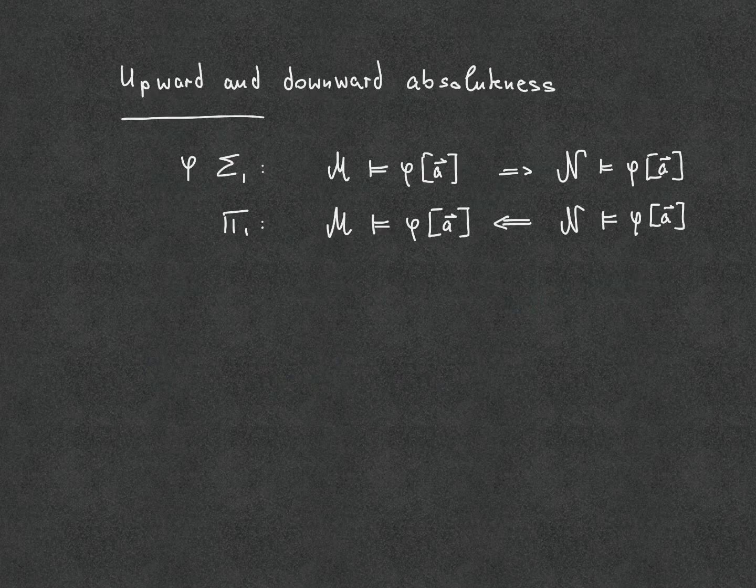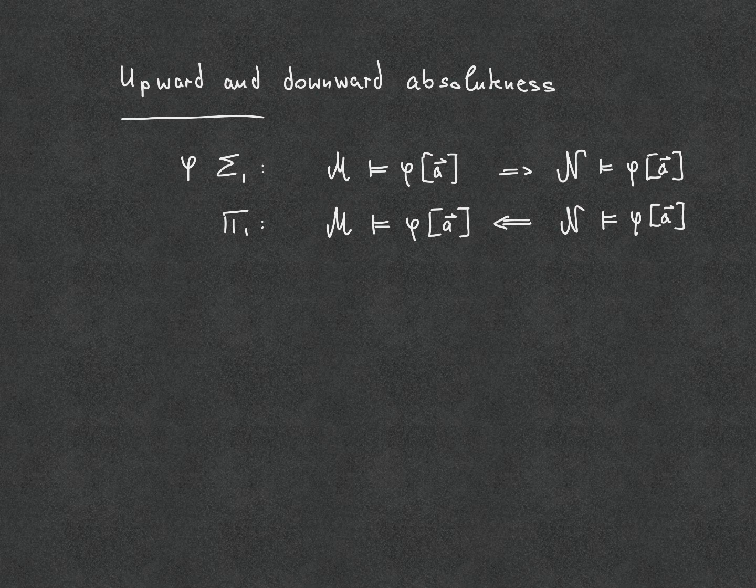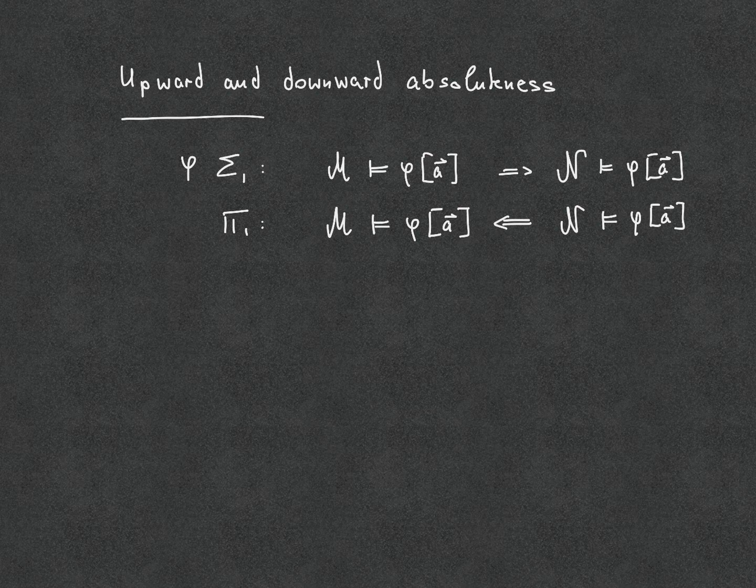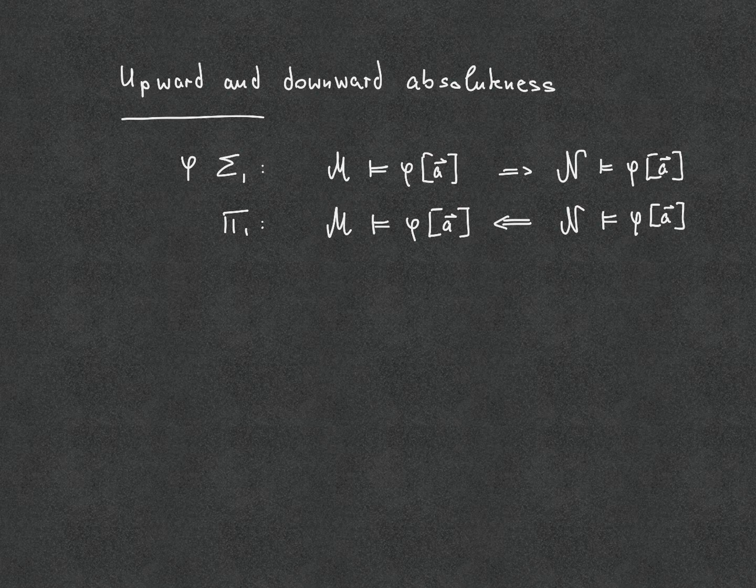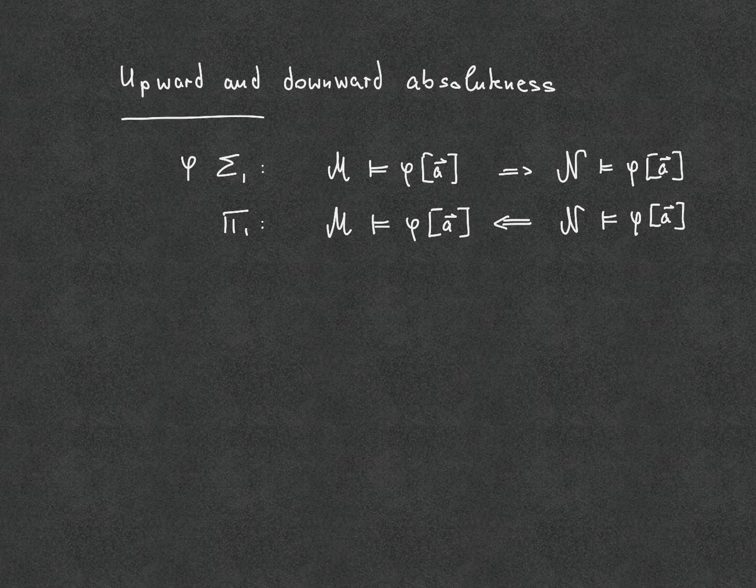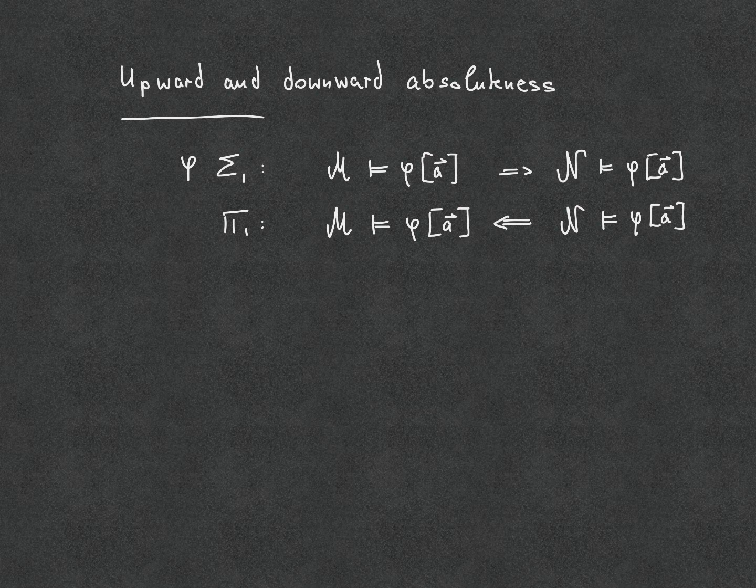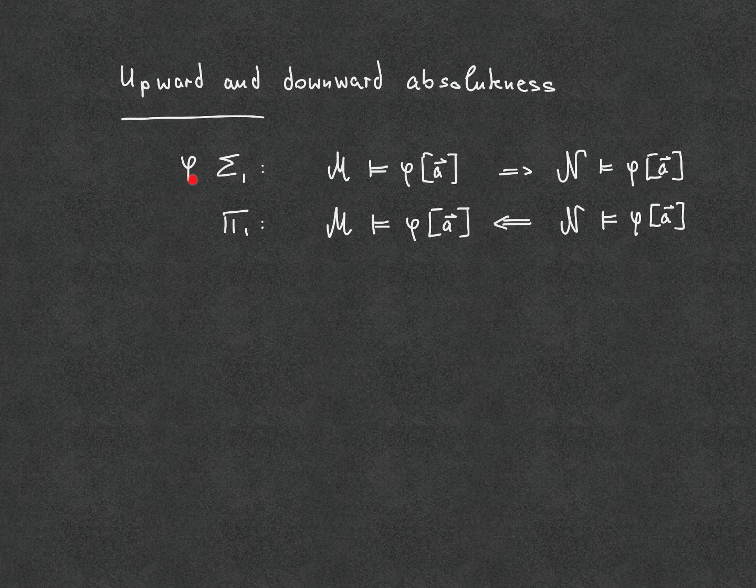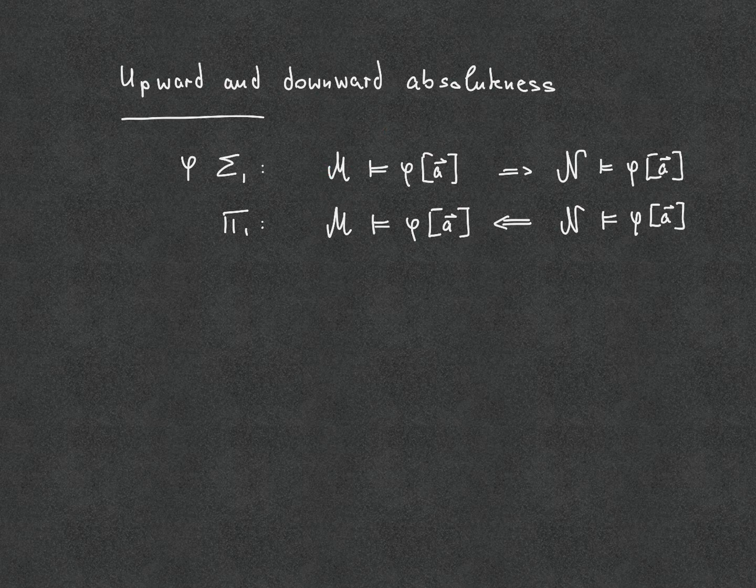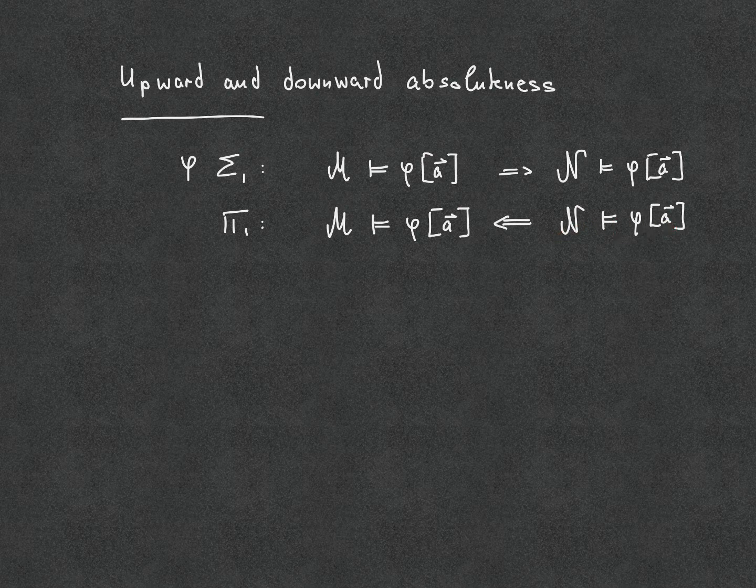So having the absoluteness between models of PA0 that are initial segments or end extensions of each other, we can now get absoluteness for slightly stronger formulas, albeit not the bidirectional absoluteness we had before. We only get what is called upward and downward absoluteness. So for sigma-1 formulas, we get that if they hold in the smaller structure, then they also hold in the bigger structure. Whereas if pi-1 formulas hold in the bigger structure, then they also hold in the smaller structures.